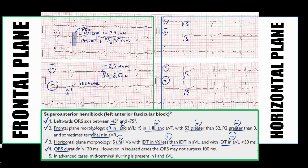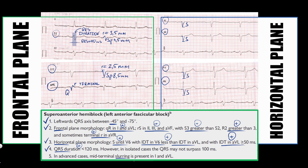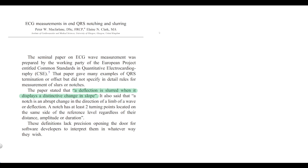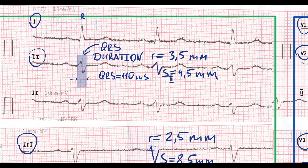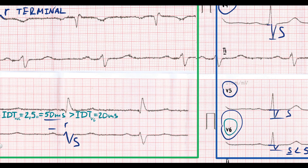In some cases, mid-terminal QRS slurring can be present in AVL and the first standard lead. A deflection is slurred when it displays a distinctive change in slope. QRS slurring can be identified as an angle between the initial and terminal part of the R-wave downslope. In this ECG, terminal QRS slurring is present in the first standard lead and the same is seen in AVL, which further confirms the left anterior fascicular block.